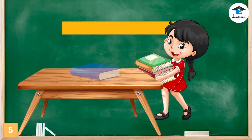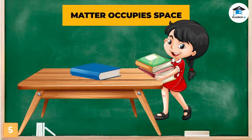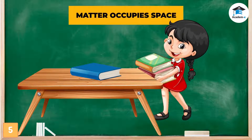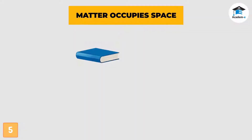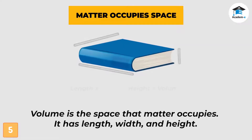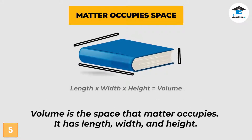Place a book on a table — what do you notice? The book occupies space on the table. The space that it occupies is called volume. You can determine the volume of the book by multiplying its length, width, and height.